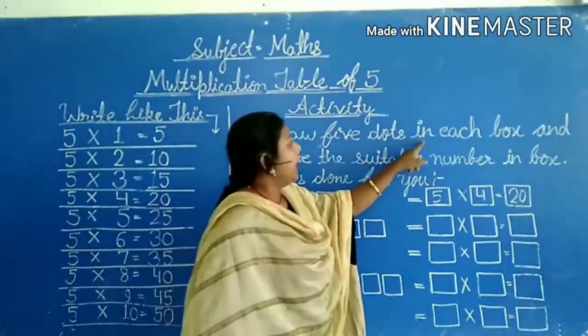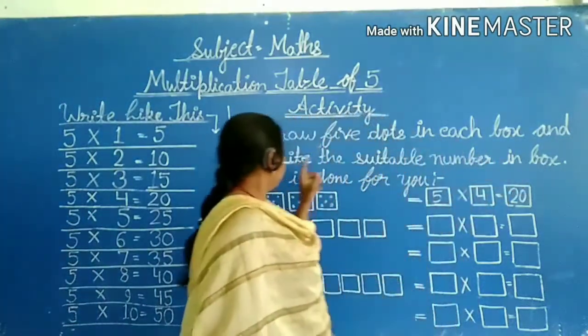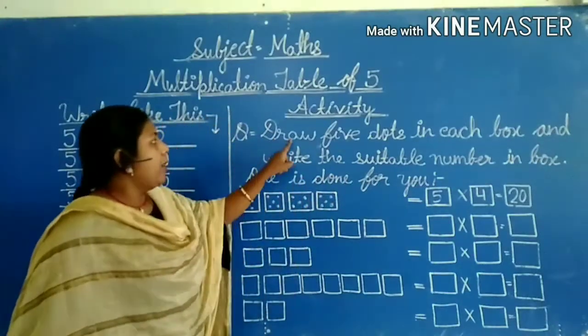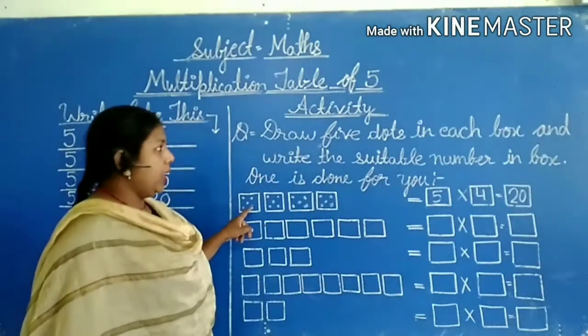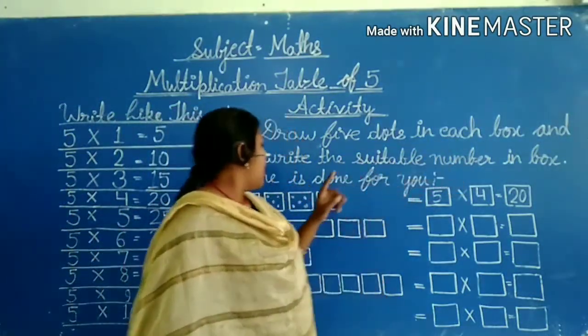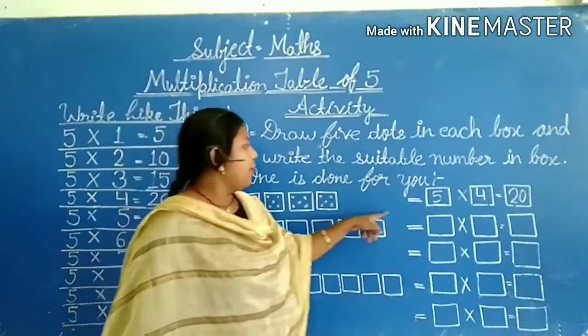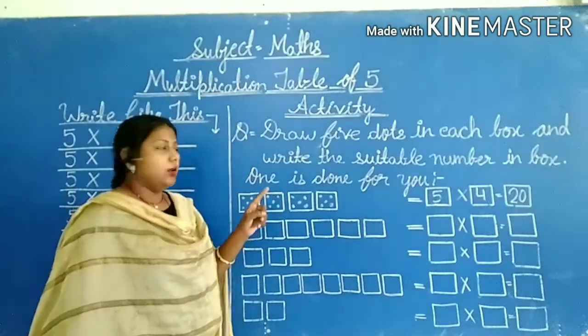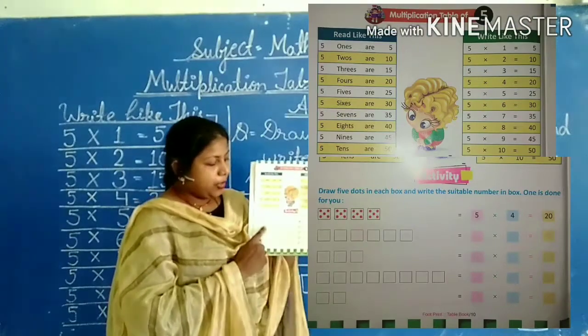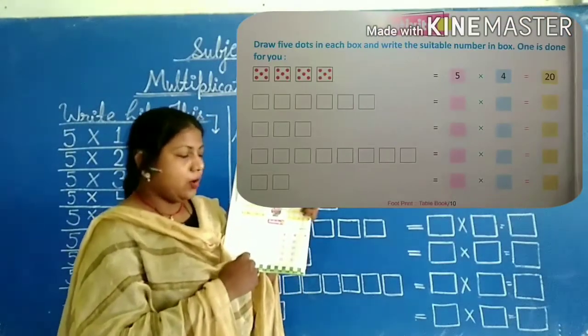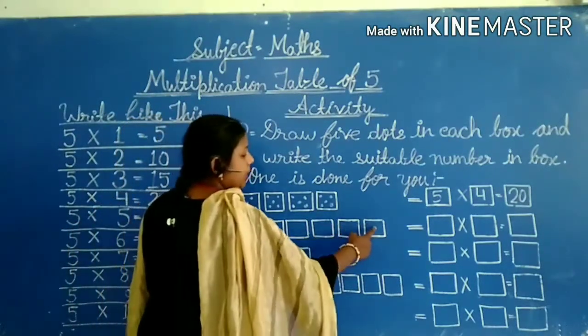Draw five dots in each box and write the suitable number in each box. One is done for you. I have to write the suitable number in box. If you will see your next box, you will see the same pattern here. You have to write the suitable number here.